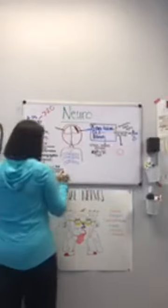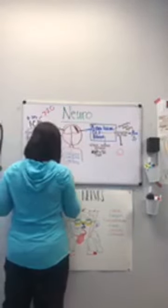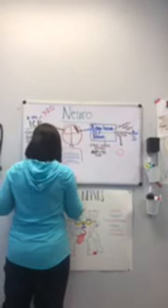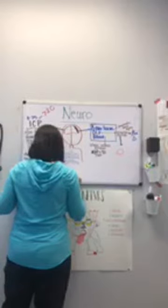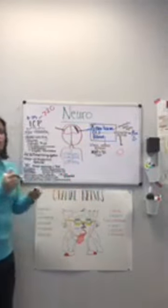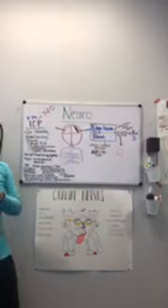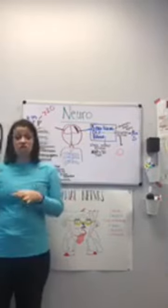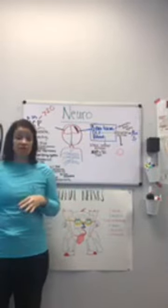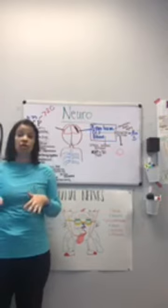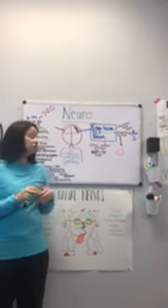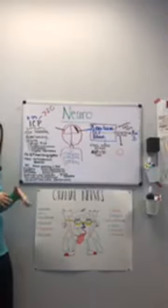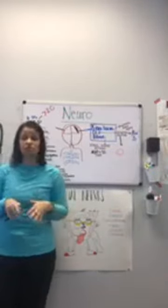We're going to put them on seizure precautions. What's included in seizure precautions for your neuro patient? Padded bed rails, bed in the low locked position, oxygen at the bedside, and suction at the bedside — check that both are working correctly before you start your shift. Let's talk about seizure activity quickly because there are lots of exam questions about your role during seizures. Most patients with seizure disorders have an aura first.